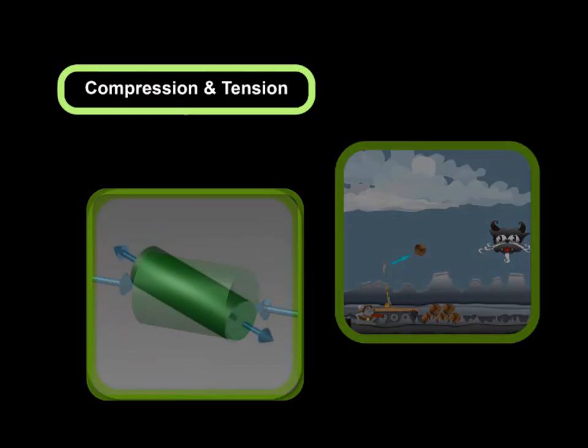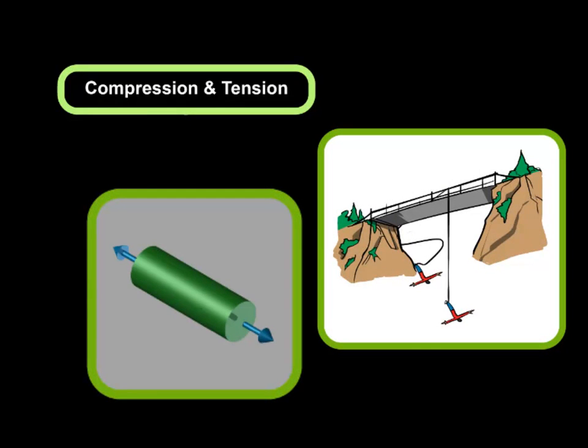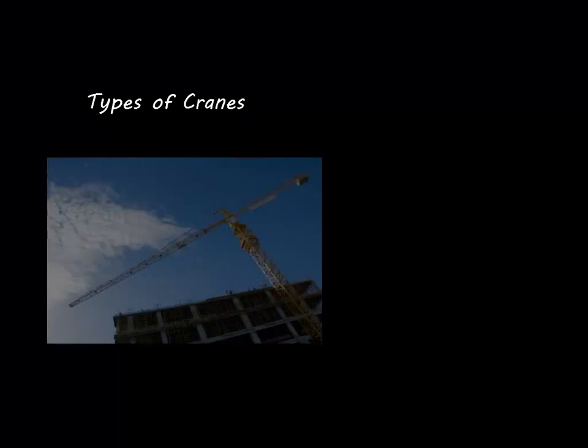Tension is the opposite of compression—it's the force that pulls or stretches an object, like the bungee cord used by this bungee jumper. Now that we've reviewed the concepts a bit, let's look at a few different types of cranes. Cranes come in many different forms. Some are attached to the buildings they're hoping to construct, others might be driven to the construction site.